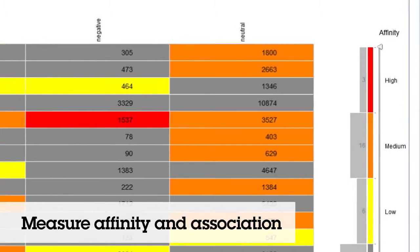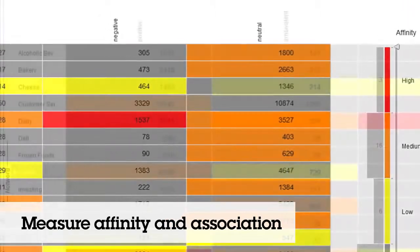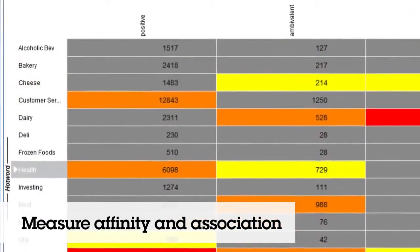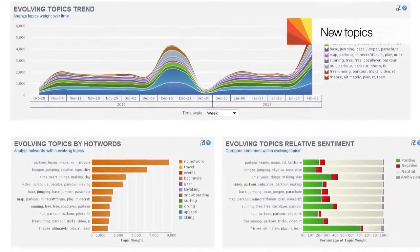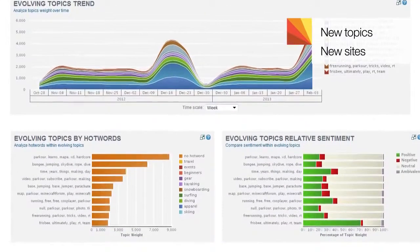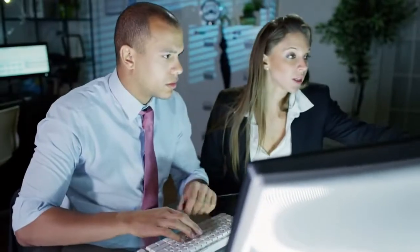Measure relationships including affinity and association to understand what's driving the behaviors. Find out what's emerging on the horizon as new topics, new sites, new participants. Make intelligent assessments of your investments in products, services, markets, campaigns, partners and more.